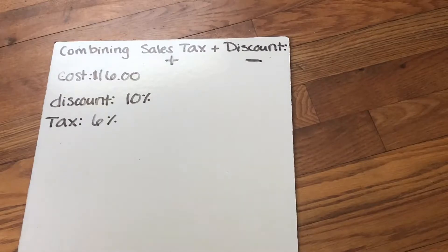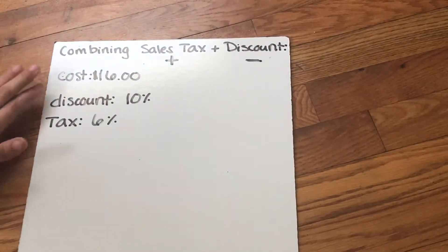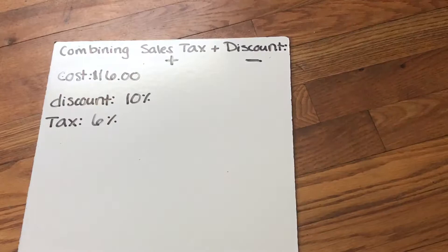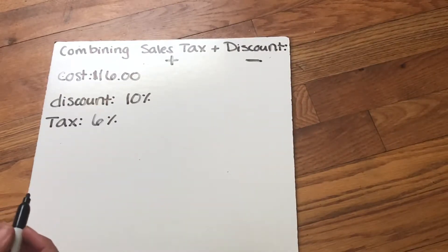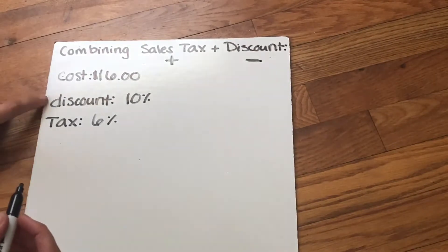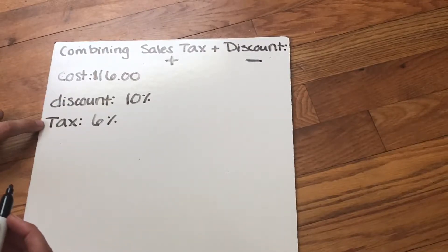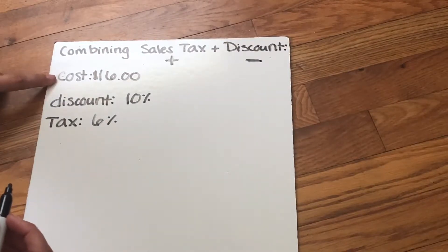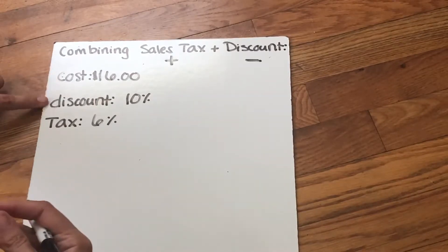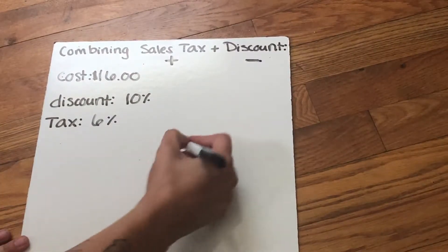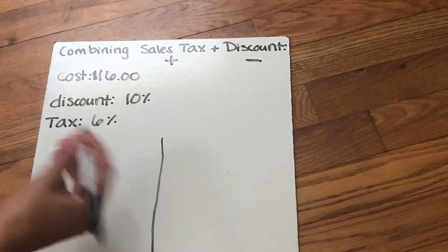So I know how to calculate sales tax, I know how to calculate discount, but I need to do them together. And the first one we need to do is calculate the discount because we're only gonna pay tax on what we actually pay for. And we're not gonna actually pay 16 whole dollars. We're gonna pay less than that since we have a discount.